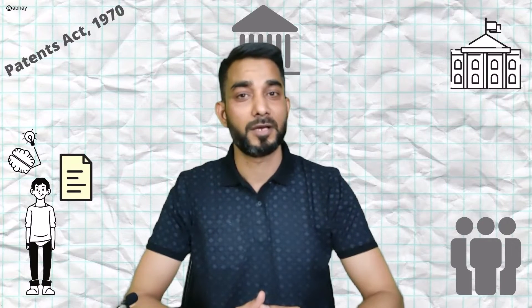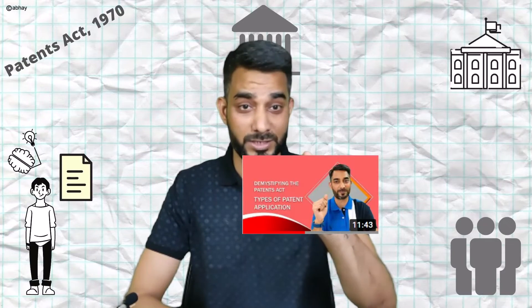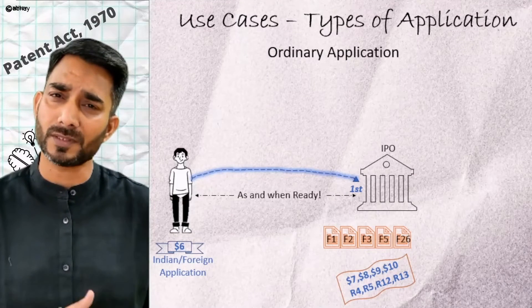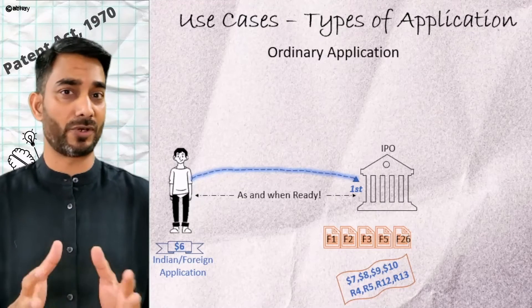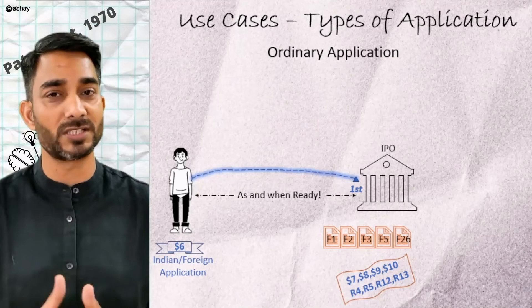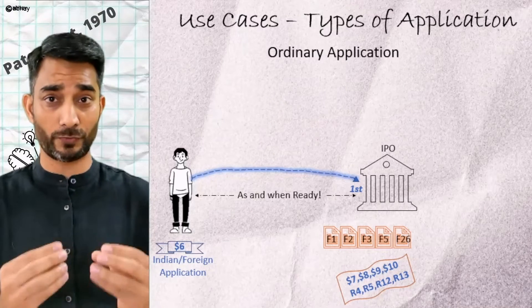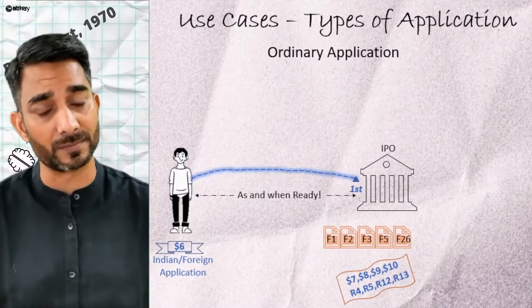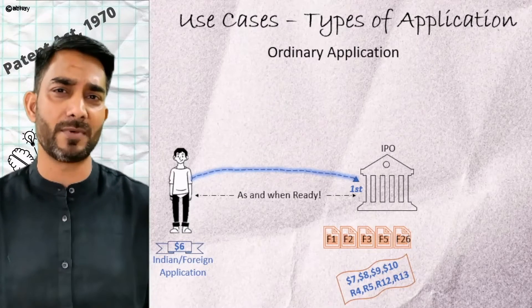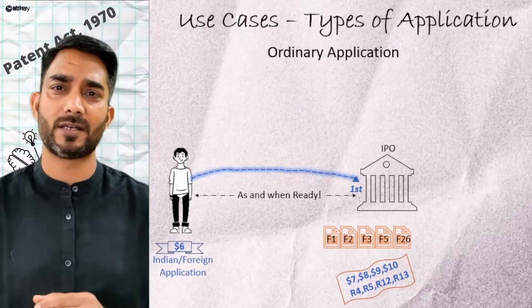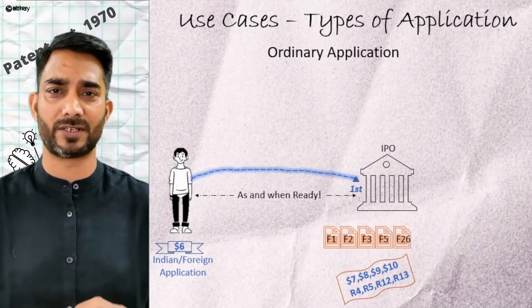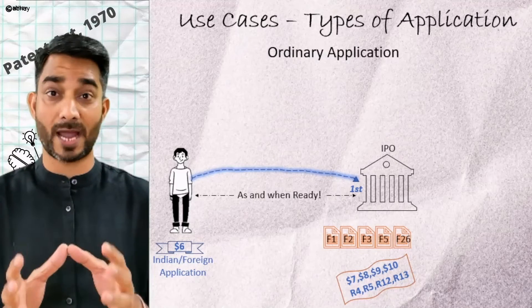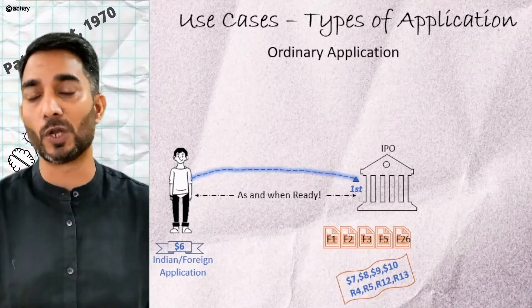Patent rights are territorial in nature. What does it mean? It means that you need to file an application in all the countries where you seek protection. At the same time, we also know that all patent offices require your idea to have novelty and non-obviousness — your idea needs to satisfy these two requirements along with others.